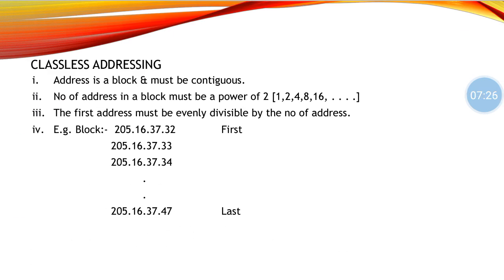Now focusing on classless addressing, it has three major restrictions. The first restriction is that addresses in a block must be contiguous — if the first address ends with 32, the second must be 33, the third 34, and so on. The second restriction is that the number of addresses in a block must be a power of 2. In the given example, the block starts with 32 and ends with 47, giving 16 addresses. Since 2 raised to 4 equals 16, a block can have 1, 2, 4, 8, 16, or other powers of 2 addresses.